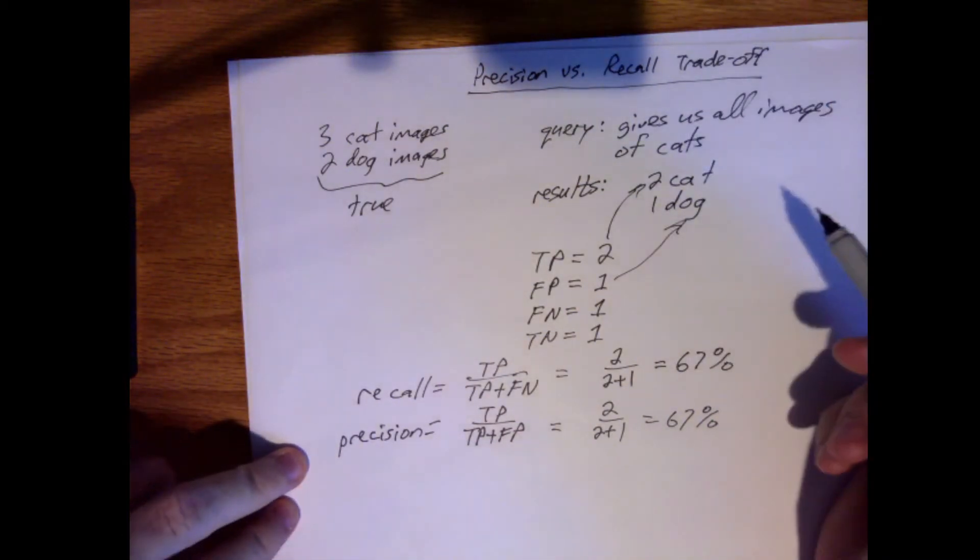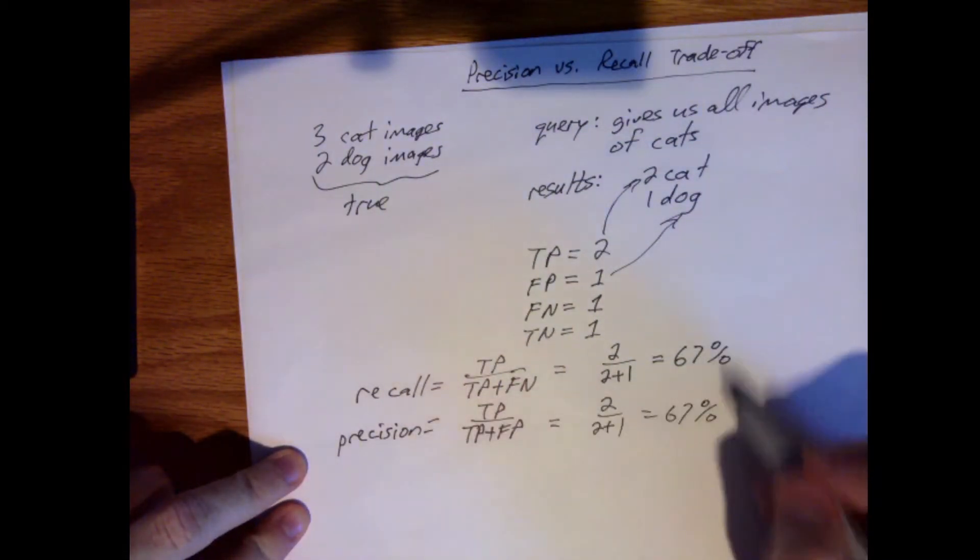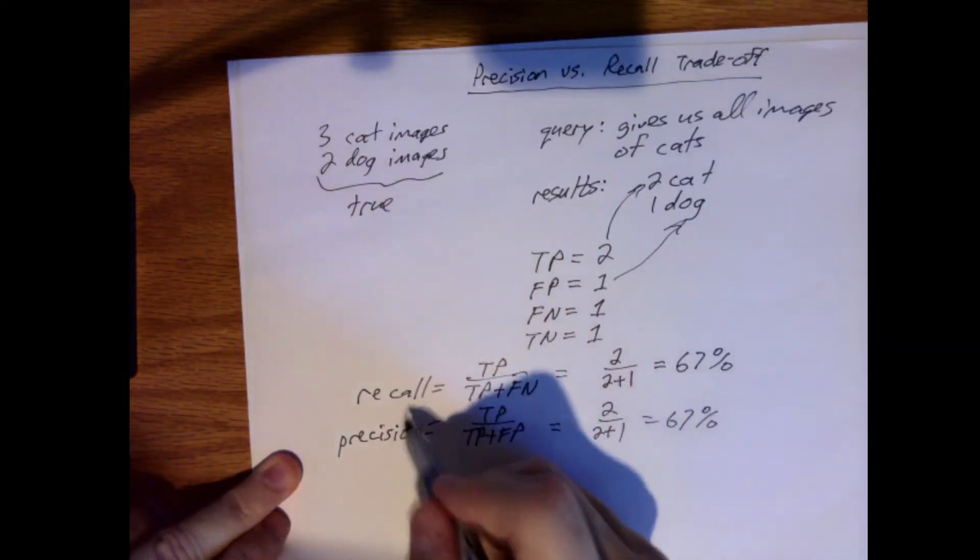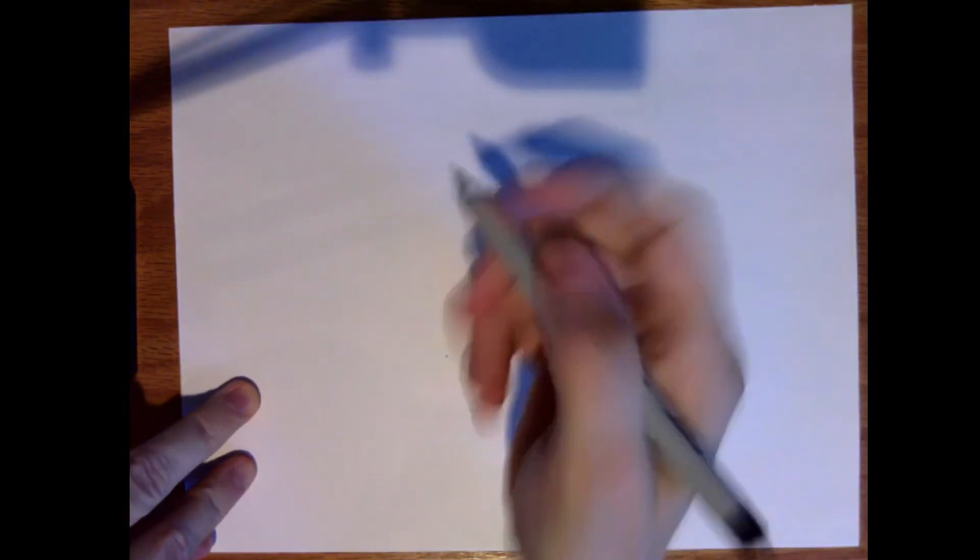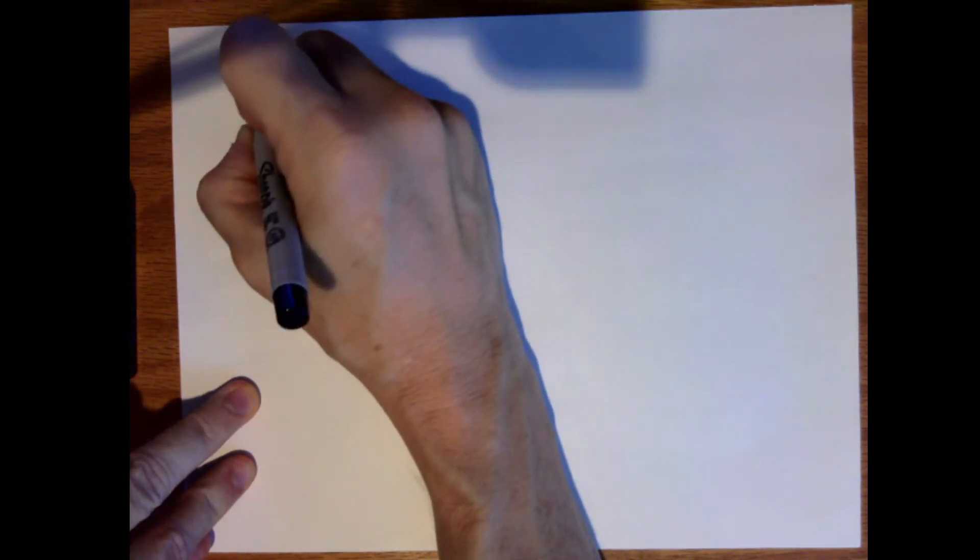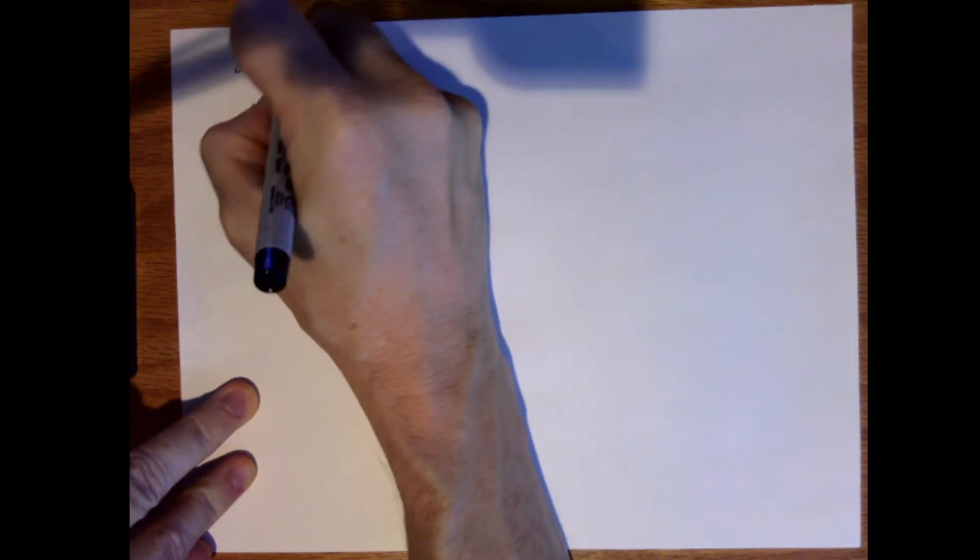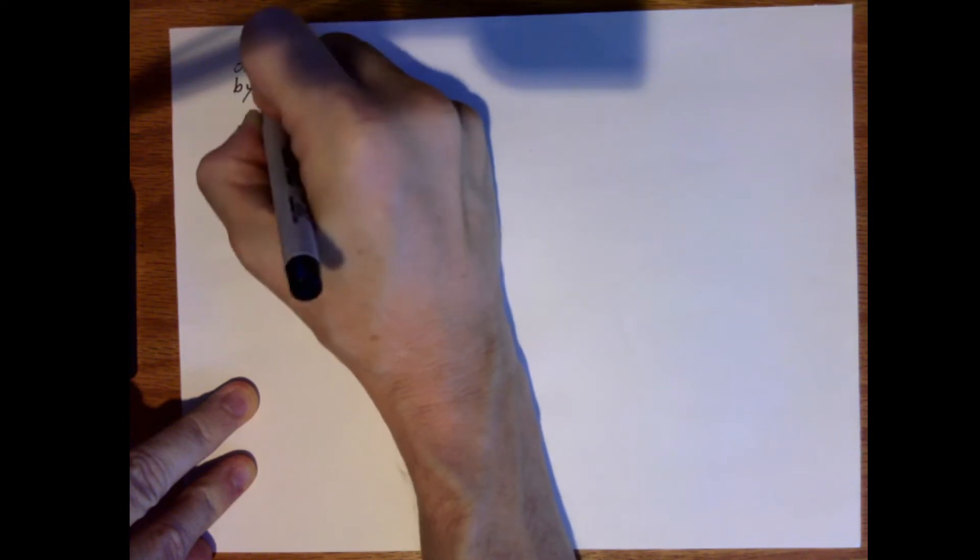So where does the tradeoff come in? These values right here are based upon a particular threshold. So now let's work through an example where we change the threshold and see how it changes the recall and precision. All right, so let's create a table here. So over here I'm going to have the images in order by score, highest to lowest.